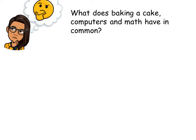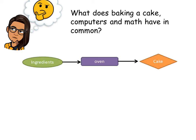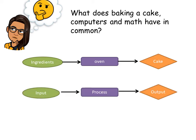Before we go into the details, have you ever given much thought to this question: what does baking a cake, computers, and math have in common? When making a cake you put your ingredients together, combine them, then put them in an oven and the oven produces a cake. With computers, when typing, you input a value — you type in a word or a phrase — the computer processes that information and then produces the results on the screen, which is what we call an output.